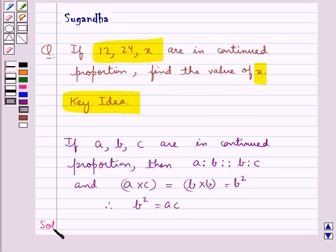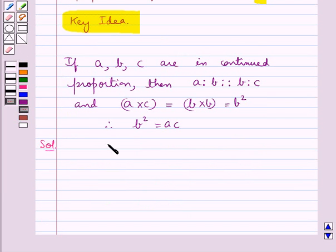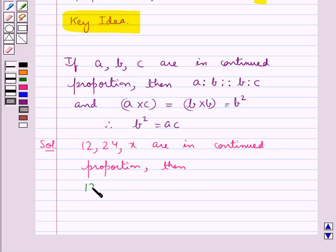Let's move on to the solution. It's given that 12, 24, and x are in continued proportion. Then we have 12 is to 24 is proportional to 24 is to x.